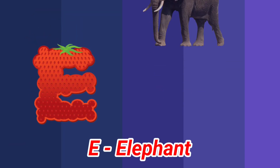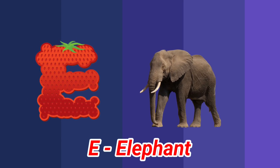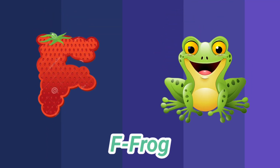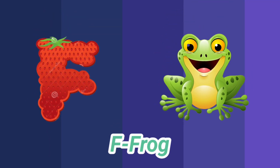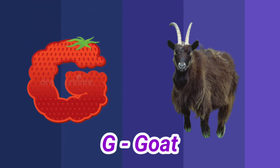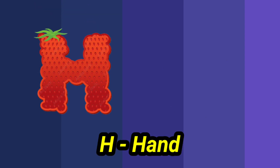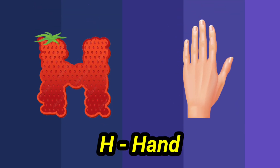E is for elephant, e-e-elephant. F is for frog, f-f-frog. G is for goat, g-g-goat. H is for hand, h-h-hand.